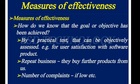Measures of effectiveness: How do we know that the goal or objective has been achieved? By a practical test that can be objectively assessed. For example, for a user's satisfaction with a software product: repeat business — they buy further products from us; number of complaints — if low, etc.